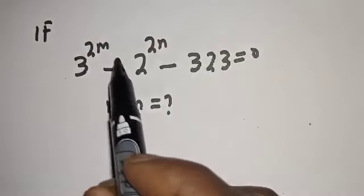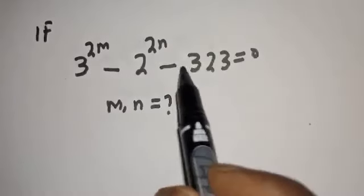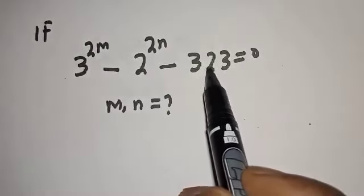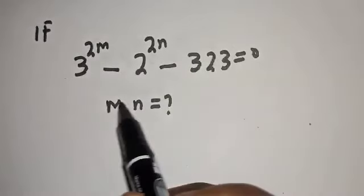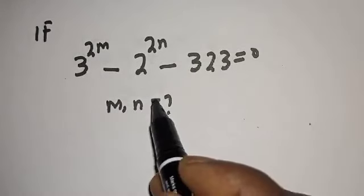If 3 raised to power 2m minus 2 raised to power 2n minus 323 is equal to 0, what is the value of m and n?